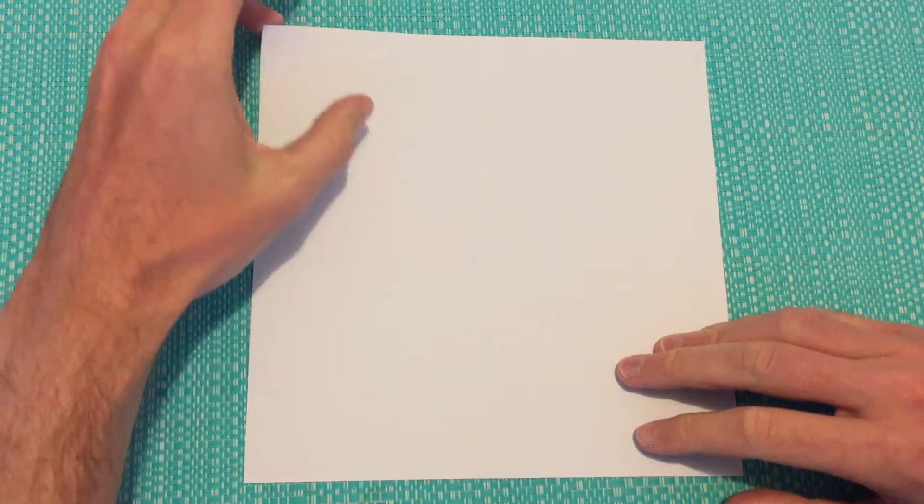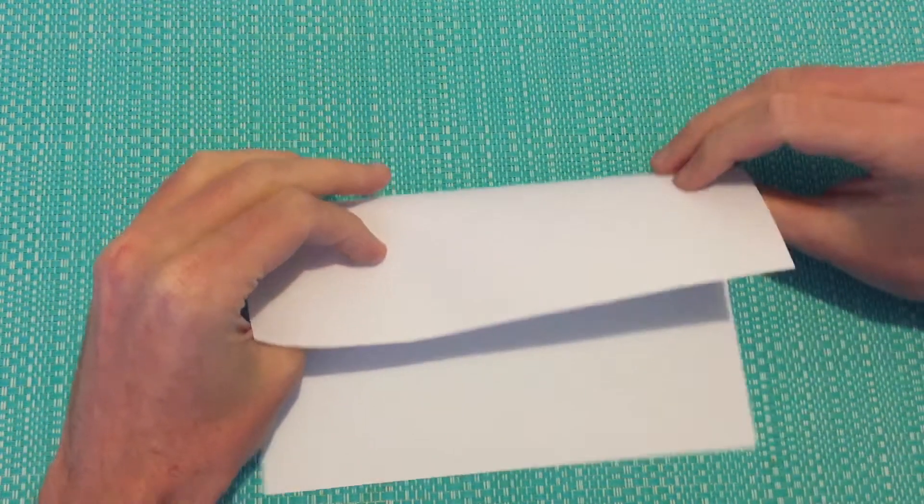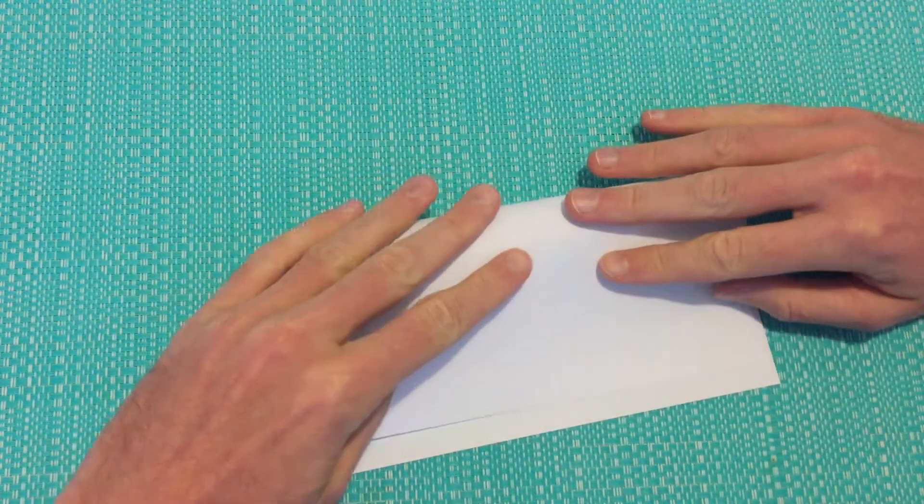Today we're going to be making an origami phone stand. To start with we'll take a square sheet of paper, we're just going to fold from the top down to the bottom.